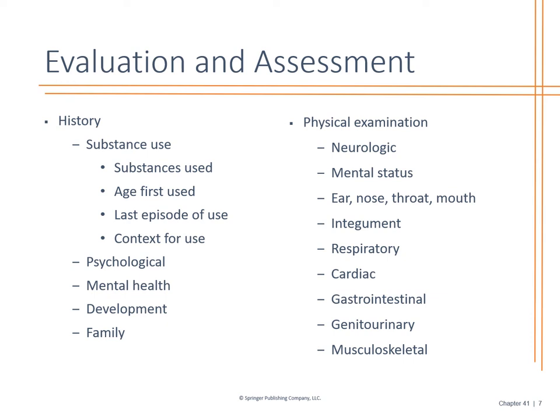History is usually of substance abuse or a family history. You look at the age they first used and the last episode they used. Why do they feel they used? Was there a stressor, something going on that led them to it? Psychological disorders, mental health, developmental issues, family issues, stressors at work? Any physical issues — do they have a developmental delay, cognitive impairment, or chronic health conditions contributing to this?